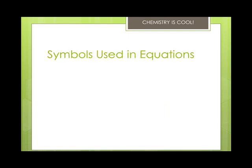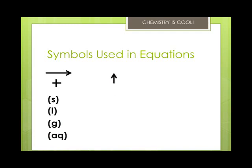There are a lot of symbols used in equations, and these are ones that you need to know. The arrow separates the reactants from the products — you read it as 'reacts to form.' A plus sign is read as 'and.' An (s) after the formula means it's a solid, (l) means it's a liquid, (g) means it's a gas, and (aq) means it's an aqueous solution, dissolved in water. An up arrow after a product indicates a gas, same as (g); a down arrow indicates a solid, same as (s).